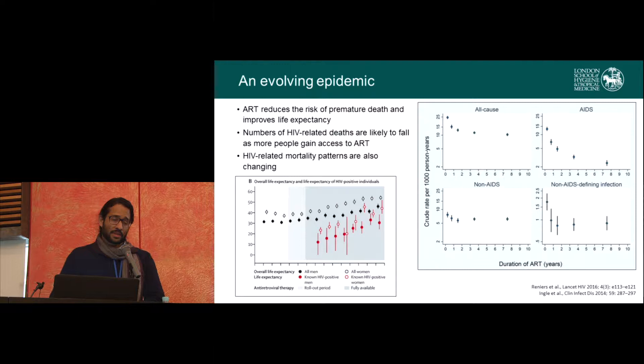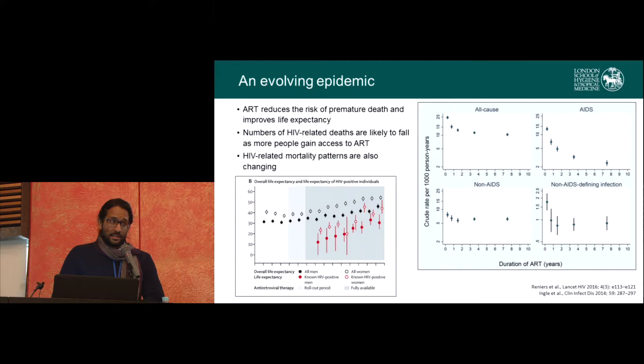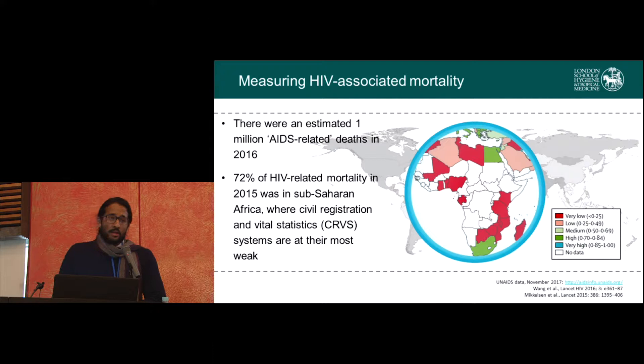On the right-hand side is something looking at cause-specific mortality. The first graph in the top left-hand corner is all-cause mortality, which is dropping. The top right graph, which is the most drastic, is AIDS-related death — death due to advanced immunosuppression in HIV-positive people — and you can see quite a steep decline the longer people are on ART. That's not necessarily the case in low- and middle-income countries, in particular sub-Saharan Africa.